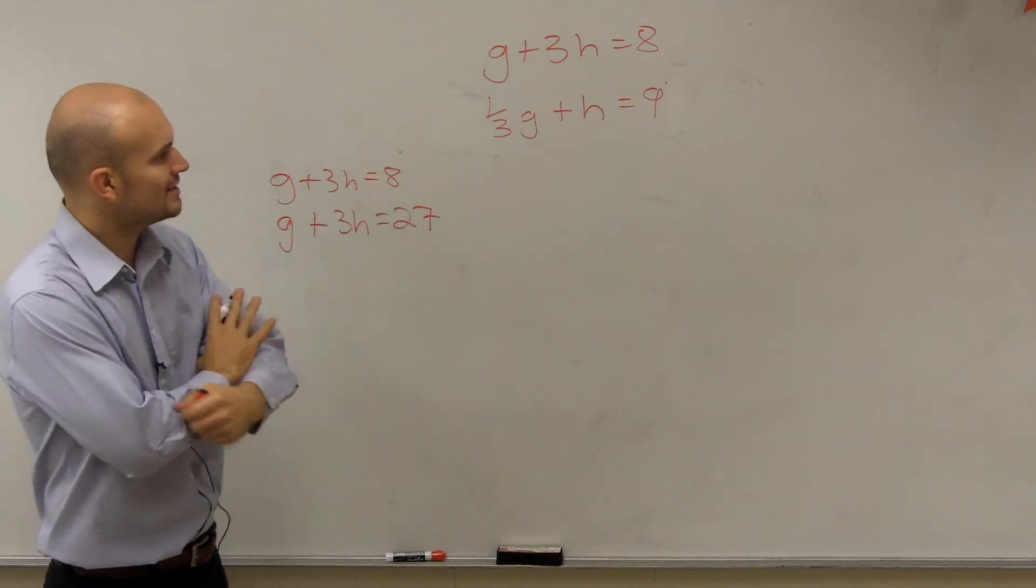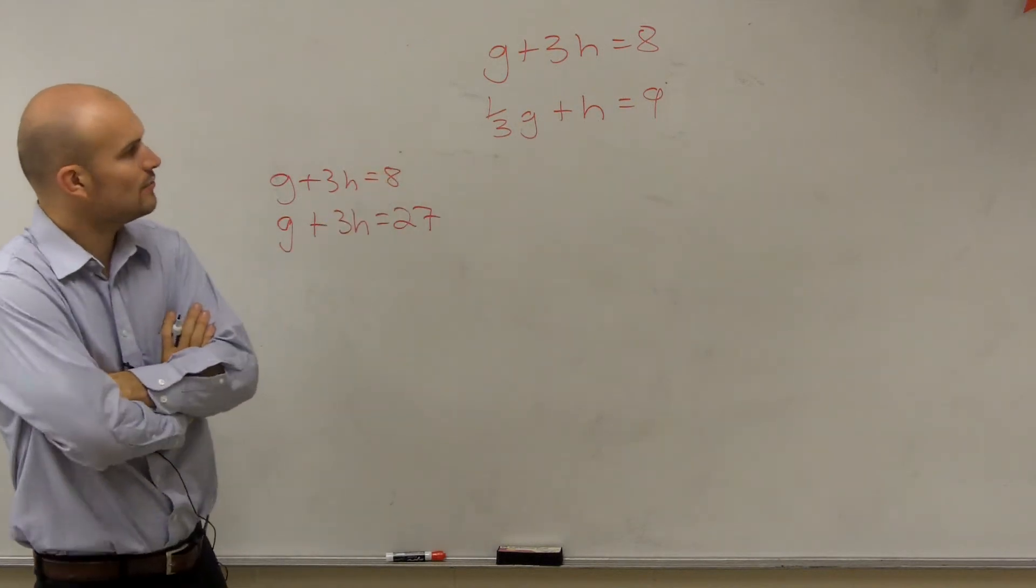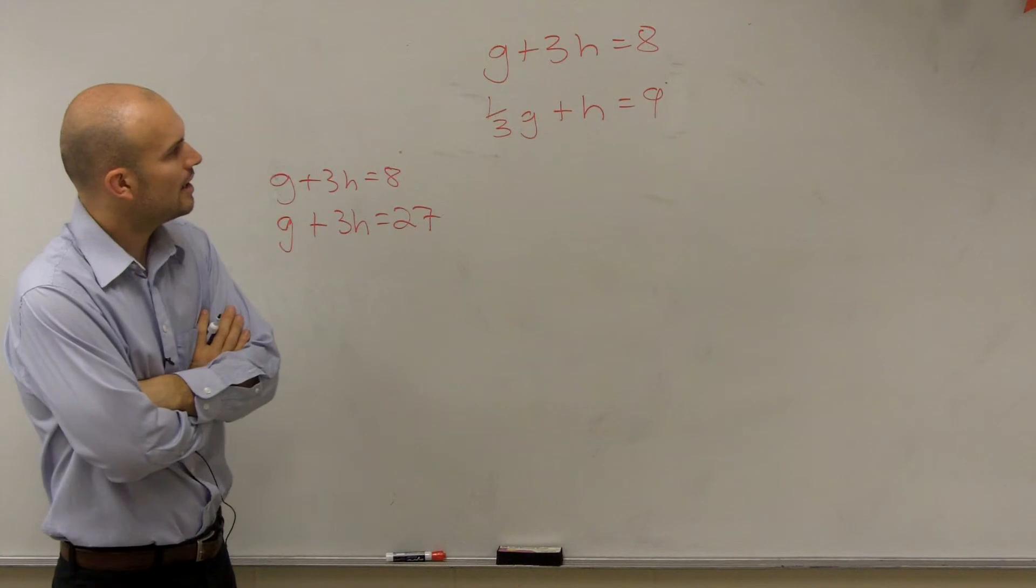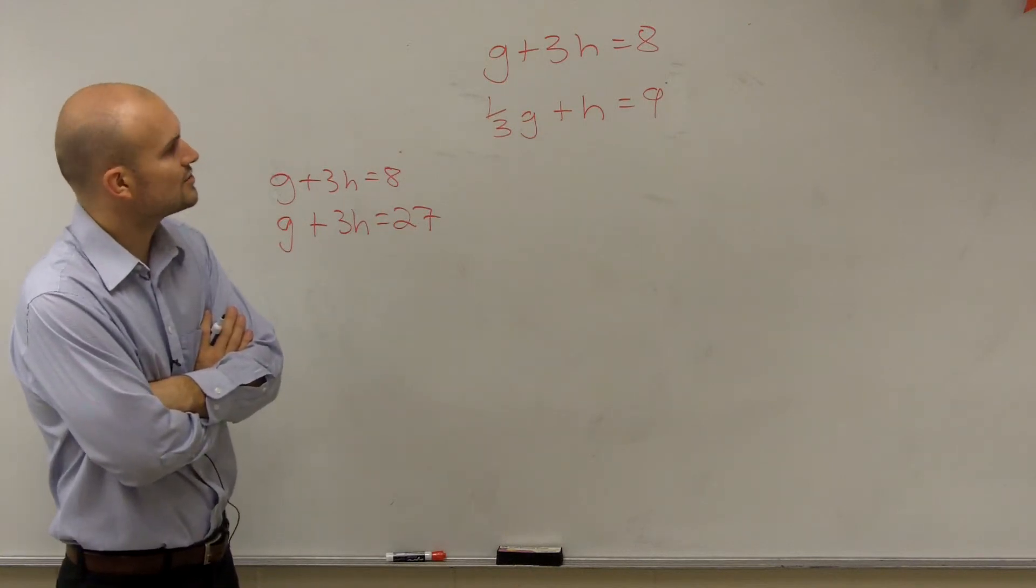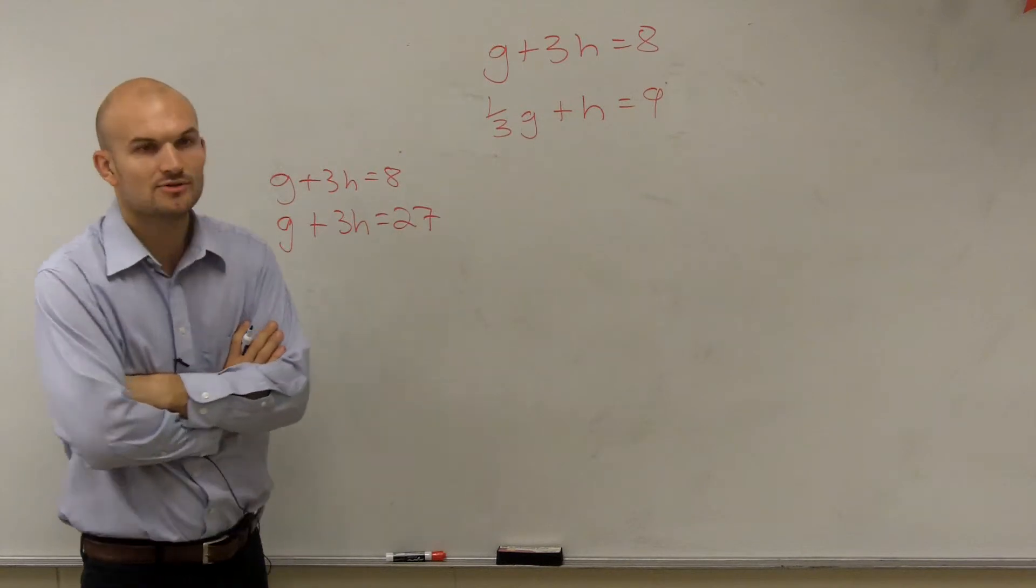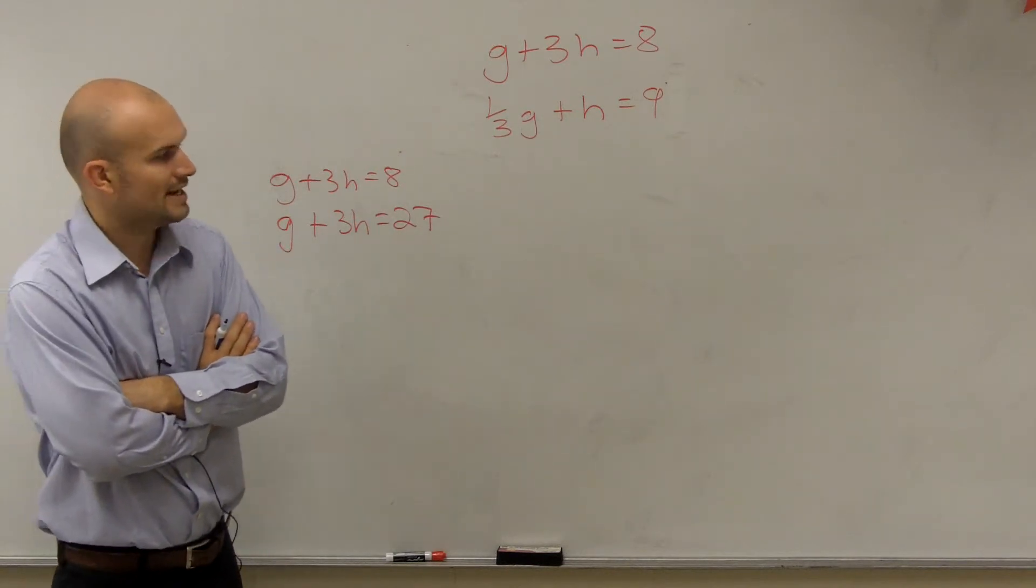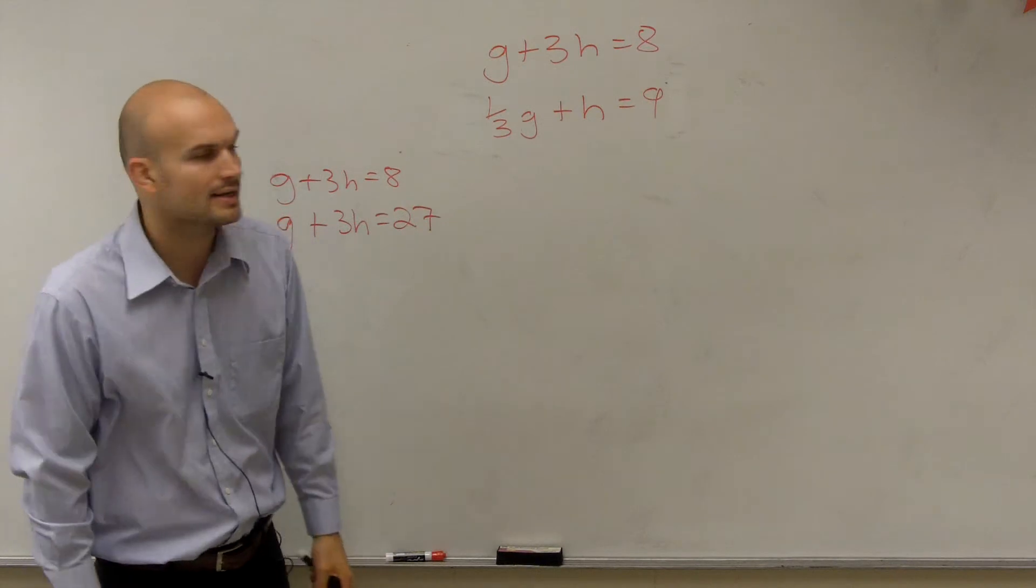So if I'm going to look at this, I have negative 1/3 g plus h. I'm going to plug in. So which one do I want to solve for? You can multiply either one. But let's just say I want to solve for h. All right?